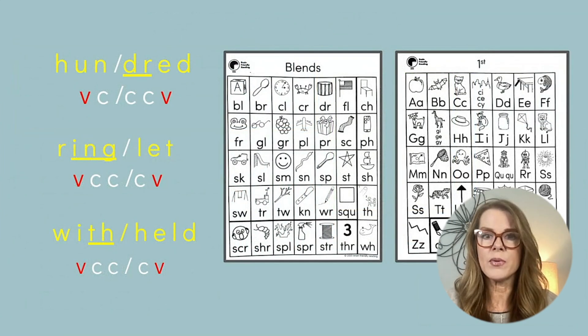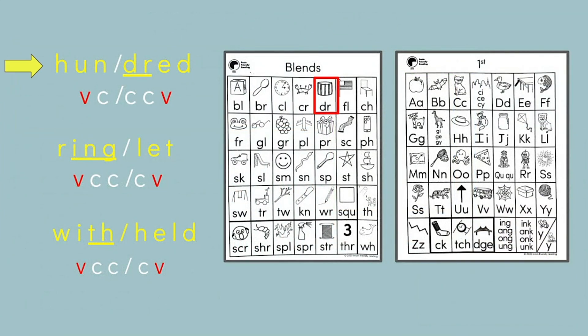Let's take a look at some examples. The word 'hundred' has a beginning blend DR, so we will keep that together and divide before it. The word 'ringlet' has an ING chunk that stays together — that is an ending chunk, so we will divide after it. The word 'withheld' has an H brother TH, so we will underline that and keep it together and then divide after it, creating two closed syllables.